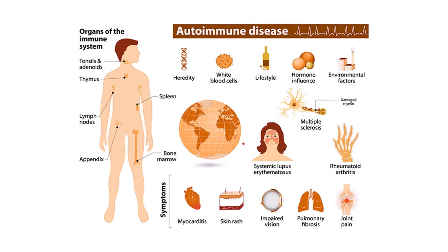Here are the organs of the immune system: tonsils and adenoids, thymus, lymph nodes, appendix, spleen, and bone marrow. The factors related to autoimmune diseases include heredity, white blood cells, lifestyle, hormonal influence, and environmental factors.